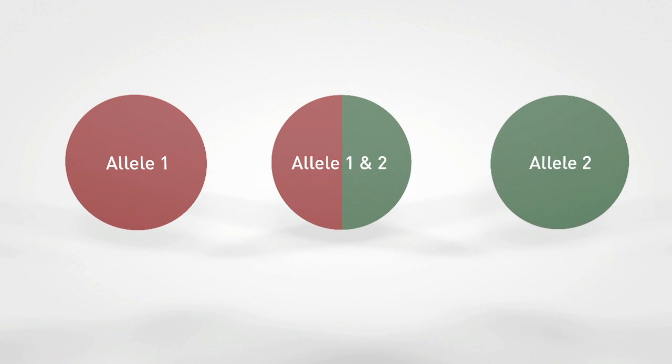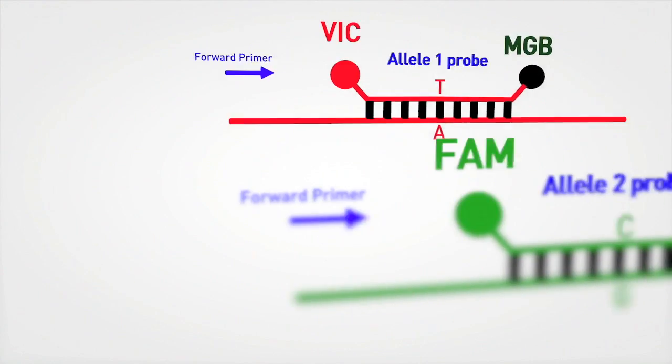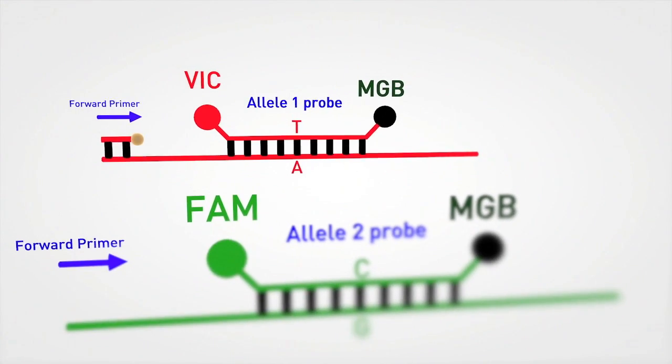homozygous for allele 1, homozygous for allele 2, or heterozygous, containing one copy of each allele. The assay utilizes two gene-specific primers and two allele-specific probes, labeled with VIC and FAM dyes, respectively.